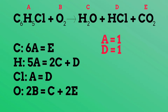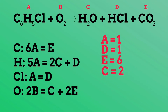Looking at the carbon equation, if variable C is six times A, then C equals six. Looking at the hydrogen equation, if A and D equal one, then C equals two. And going to the oxygen equation, if C equals two and E equals six, then B equals seven. We have now solved for all of our variables.